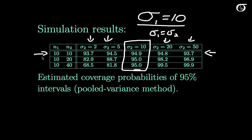But when the sample sizes differ — for example, 10 in one group and 20 in another — we start to see real problems. We'd be claiming a 95% confidence interval, but in reality the probability that the interval actually captures mu1 minus mu2 might be only about 88.7%. On the other side, coverage might be closer to 98.2%, so what we state as our confidence level is quite different from reality.